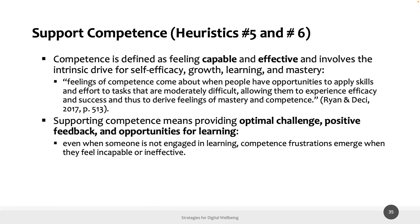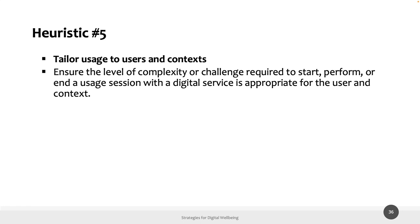Moving to competence: heuristics 5 and 6. Competence is defined as a feeling of being capable and effective, involving self-efficacy, learning, and mastery. Supporting competence means providing optimal challenge, positive feedback, and opportunities for learning. Heuristic 5 is 'tailor usage to users and context': ensure that the level of complexity or challenge required to start, perform, or end a usage session with a given digital service is appropriate for the user and context, since not all users are the same.